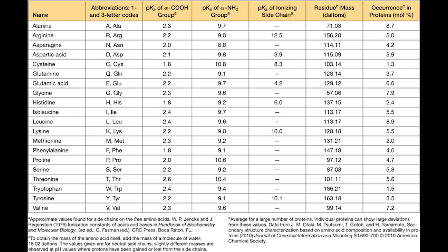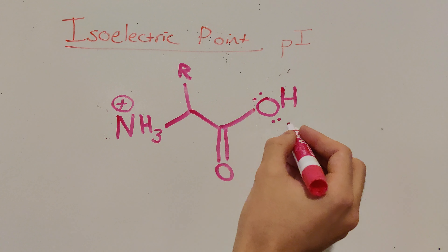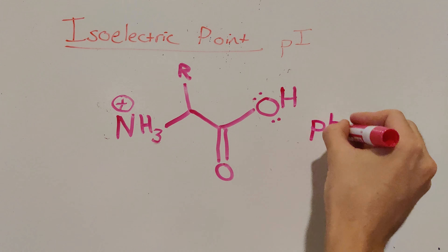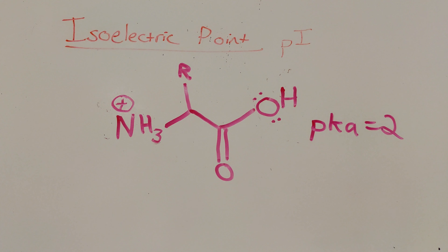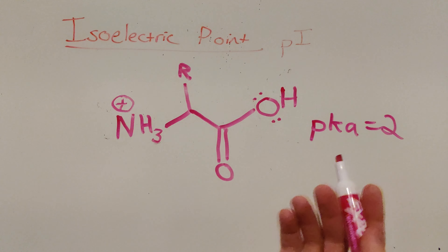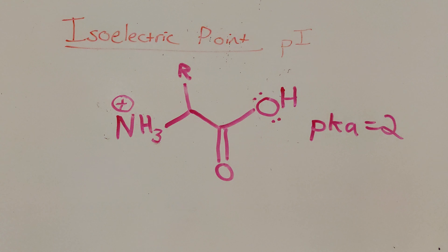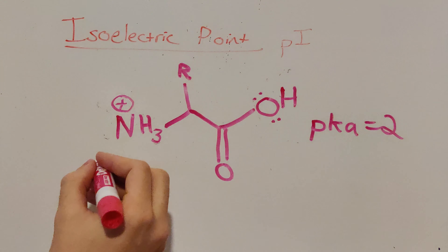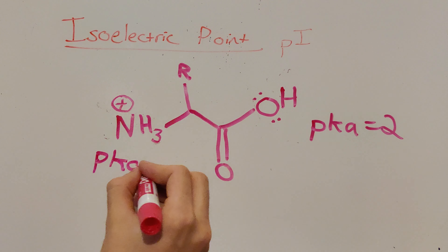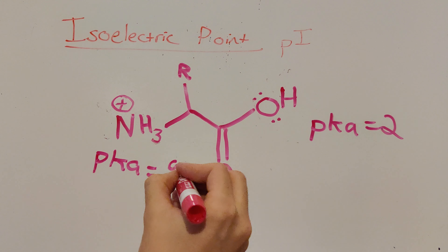I'd like to direct your attention to this table, which has all the common amino acids as well as the pKa values of their carboxylic acid, their amine, and in some cases the R chain. I'll link it in the description below. When looking at our table, we notice that most of the carboxylic acids have a pKa of around 2, so for this generic example we'll just say pKa = 2. Additionally, the pKa of our amines is about 9 on average, so we'll say 9 for this simple example.